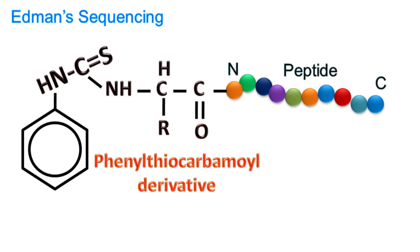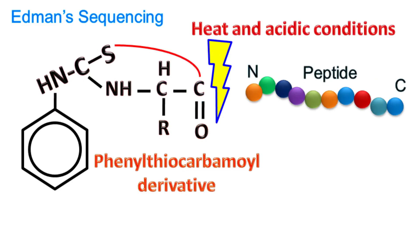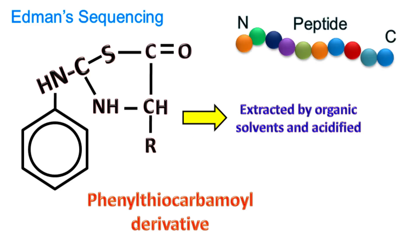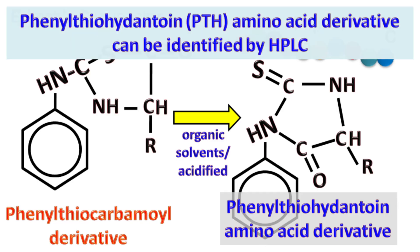Under heat and acidic conditions, this derivative is cleaved from the parent peptide and extracted by organic solvents. Once extracted, it is further acidified to form a PTH amino acid derivative, which is very stable. The PTH amino acid derivative can be easily identified by chromatography techniques like HPLC.